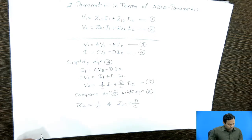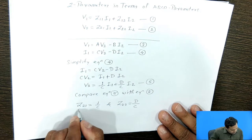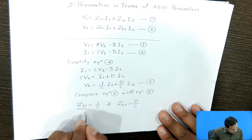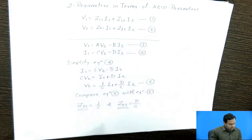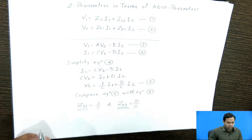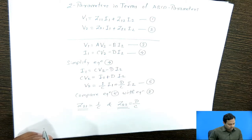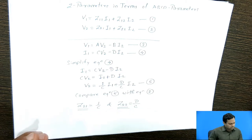Comparing equation 5 with equation 2, we can say that the value of Z21 is 1/C and the value of Z22 is D/C.